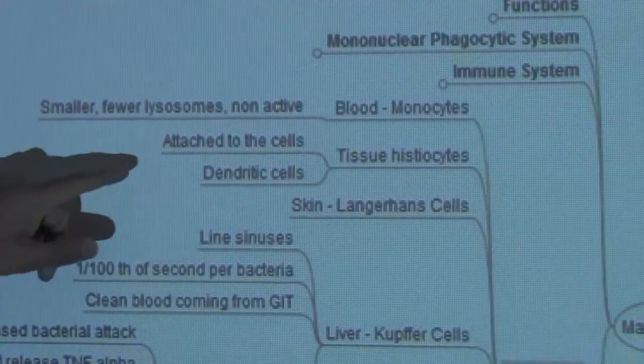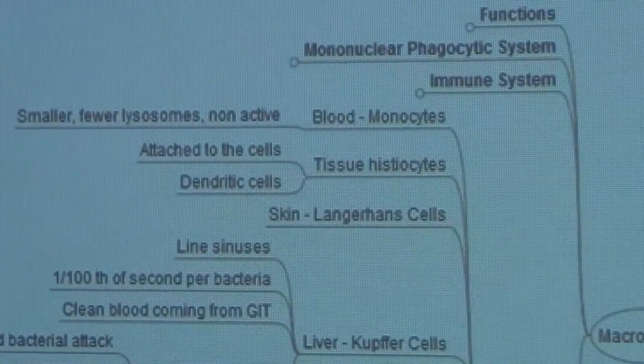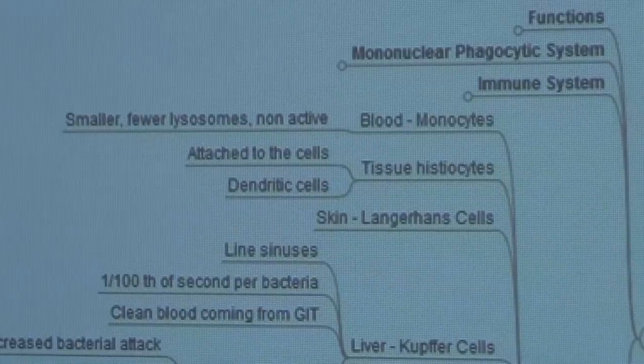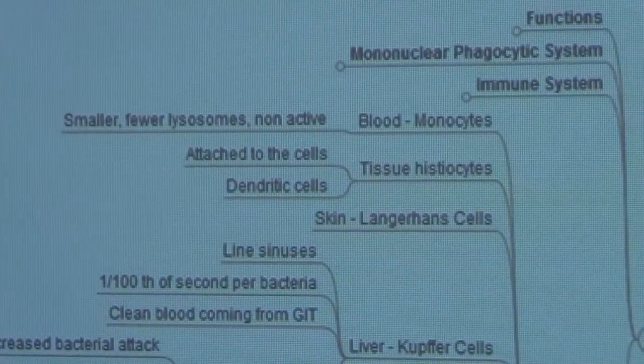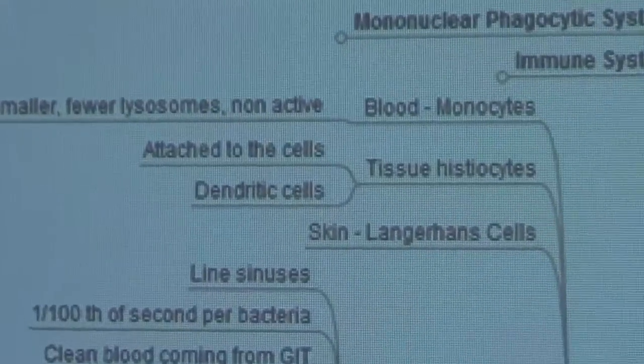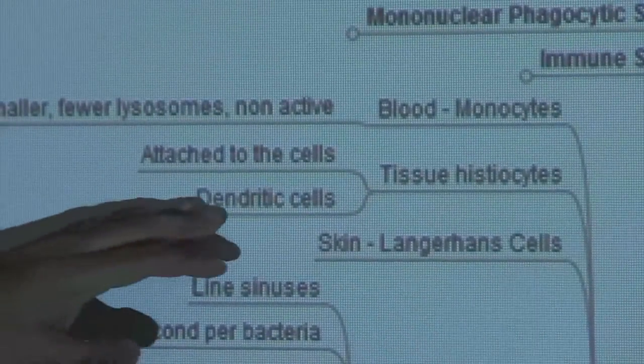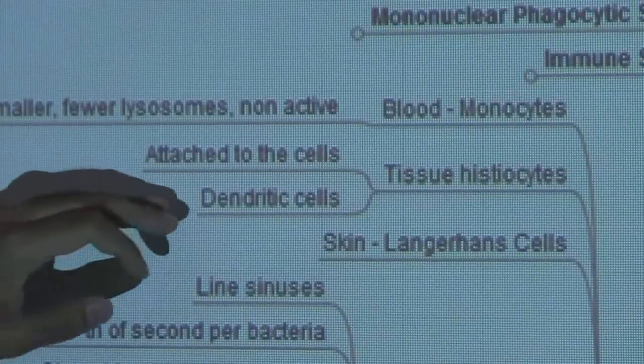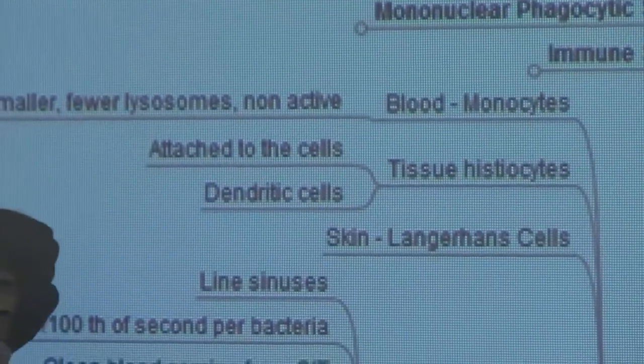So the histiocytes, they are attached to the cells. They are also sometimes called dendritic cells depending upon their appearance. Of course, the dendritic cell would mean that the appearance, they have a lot of dendrites. So we will show you a picture of the dendritic cells. But anyways, they can go inside the tissue, general connective tissue and sit there called histiocytes or called the dendritic cells.